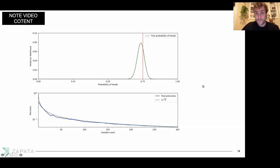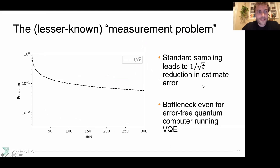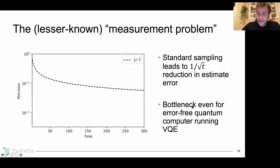This leads us to what some people call the measurement problem — or maybe the lesser-known measurement problem. Because measurements are made sequentially, the time required to achieve a certain precision scales as 1/√T, which is unfortunately fairly slow. It's important to point out that this bottleneck has nothing to do with errors on the quantum computer — it is a mere statistical phenomenon and would occur even on a perfect quantum computer running VQE. This slowness in the rate at which our confidence improves could be a bottleneck for VQE achieving quantum advantage.